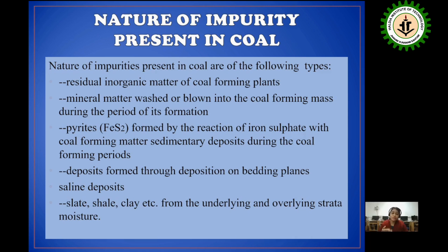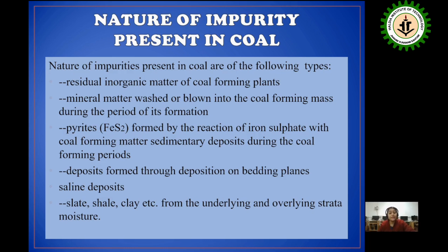Now, what is the nature of impurity present in coal? The nature of impurity present in coal may be of several types. These include pyrites — the residual inorganic matter of coal-forming plants; mineral matter washed or blown into the coal-forming mass during the period of its formation; pyrites like FeS₂ formed by the reaction of iron sulphate with coal-forming matter as sedimentary deposits during the coal-forming period; deposits formed through deposition on bedding planes; and lastly, slate, shale, clay, etc. from the underlying and overlying strata moisture.